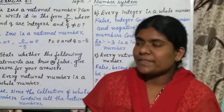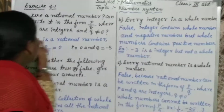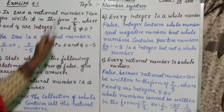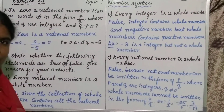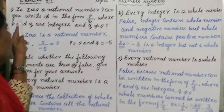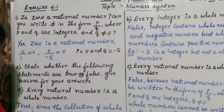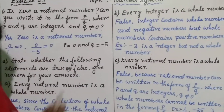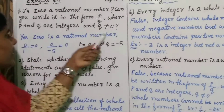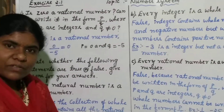The first question is: Is 0 a rational number? Can you write it in the form of P by Q, where P and Q are integers and Q does not equal to 0?